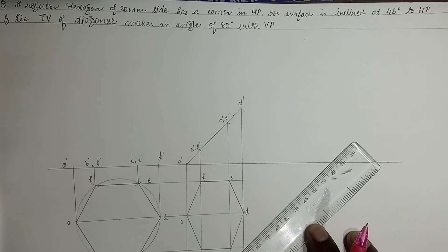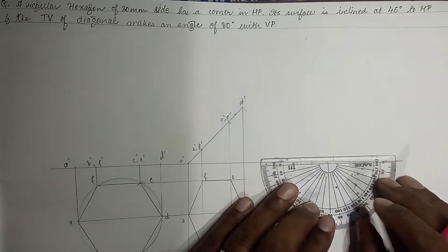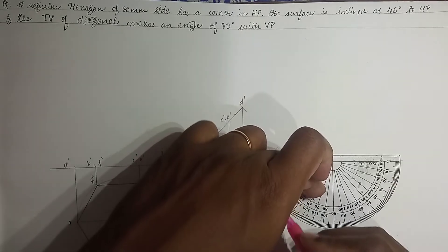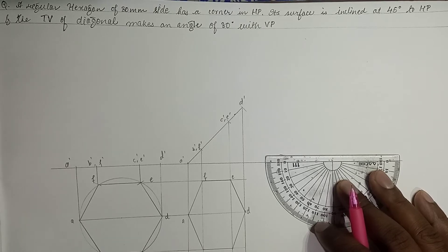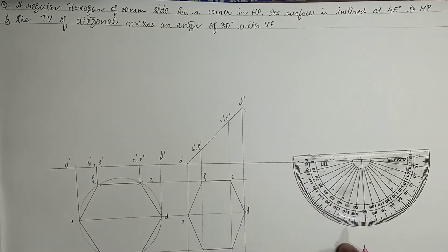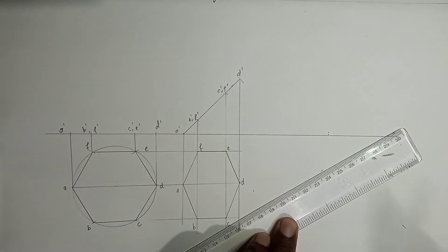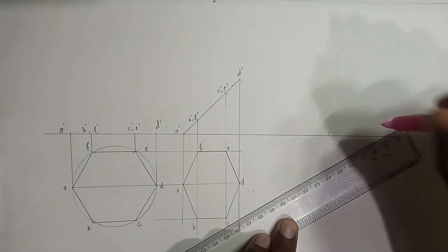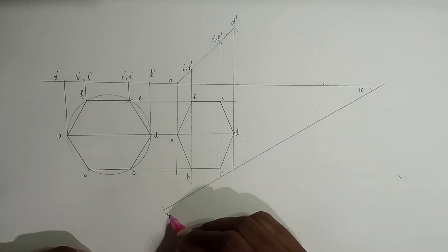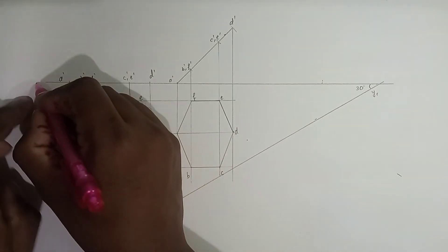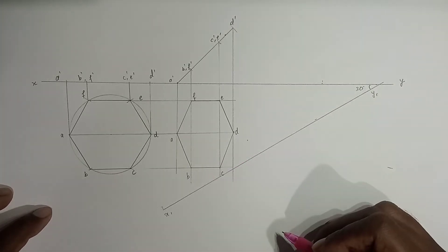We will have a line somewhere like this. We take a point at a comfortable distance and mark a point at 30 degrees with VP. 30 degrees could be marked this way or it could be marked the other way — both are okay. We mark a line at an angle of 30 degrees. This is basically the AVP; we name this as X1Y1, and this is our original XY line. So this is an auxiliary plane — an additional plane to get the projection.